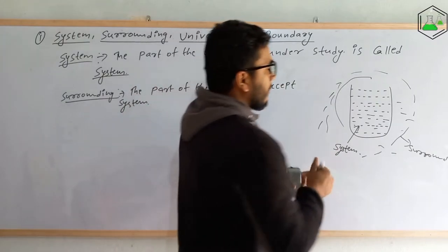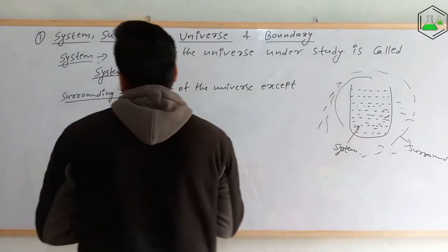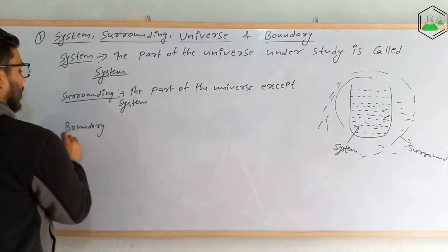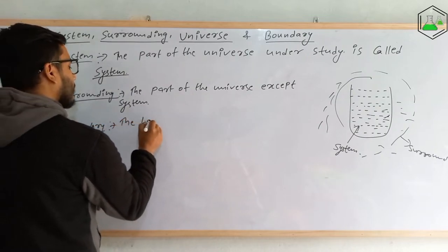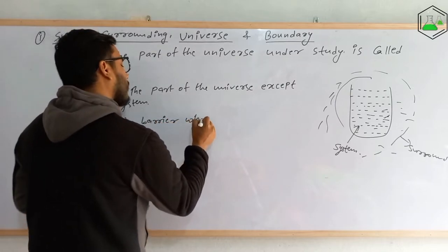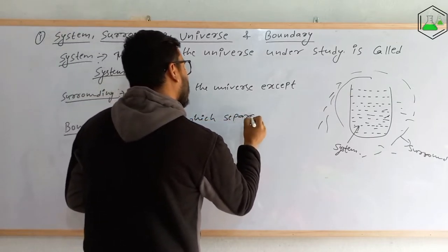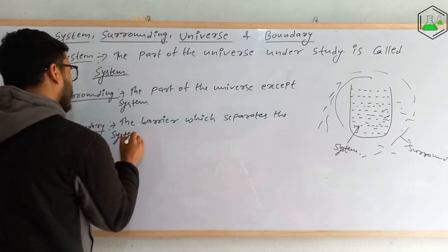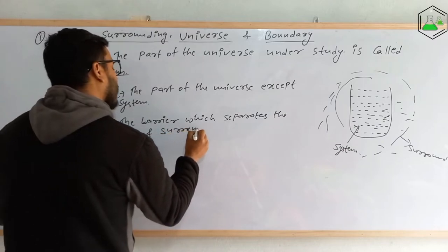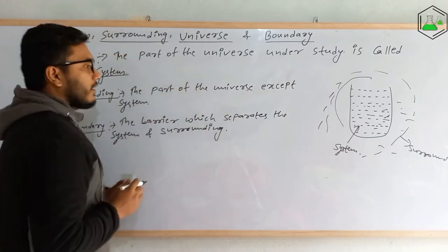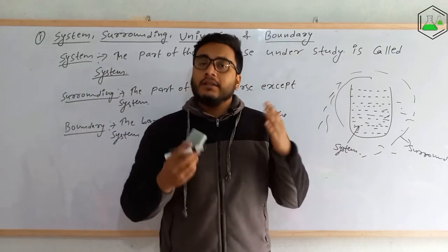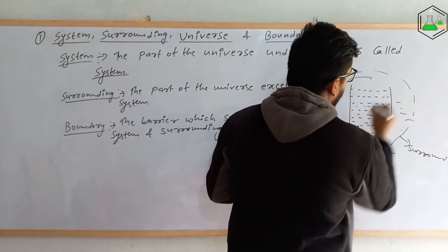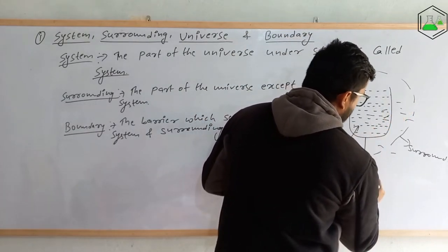Now, the boundary separates the system and the surrounding — it is the barrier. So boundary can be defined as the barrier which separates the system and the surrounding. In this particular case, this here is the boundary.